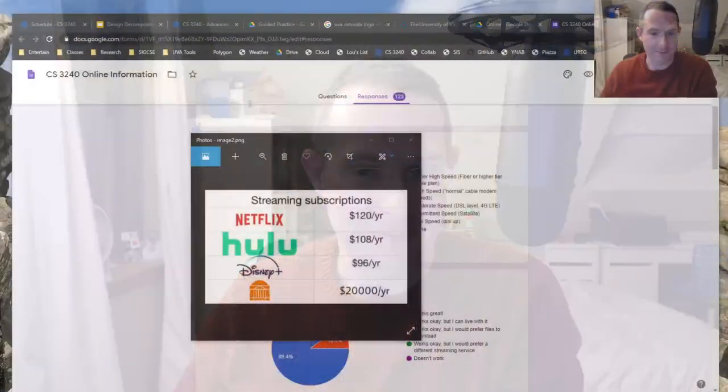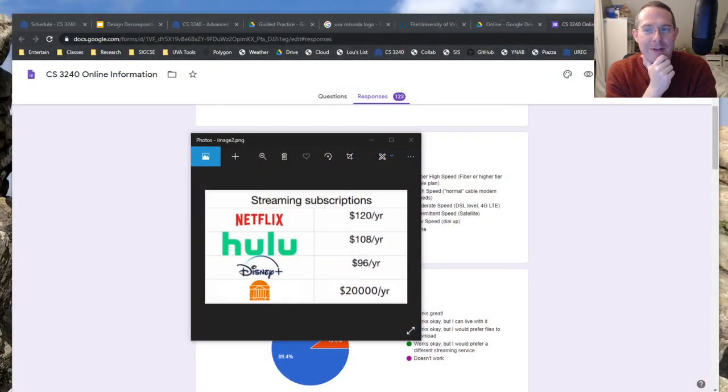But I did want to get something out tonight because there has been some updates, and I want to make sure you know what all is going on. First off, the goof for today. If you look at your streaming subscriptions, Netflix $120 a year, Hulu $108, Disney Plus $96, and UVA. Now, in all fairness, it's not the whole year, but I did see that, and that did make me giggle just a bit.